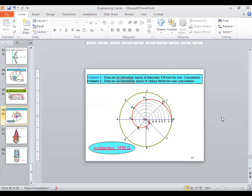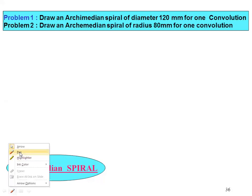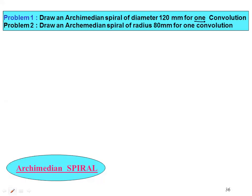Now today we are going to finish this unit. Today we will discuss three more curves. The very first is the Archimedes spiral. The problem statement is: draw an Archimedes spiral which is of diameter 120 mm and for one convolution. For your syllabus, we have this much — only one convolution.